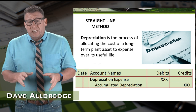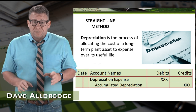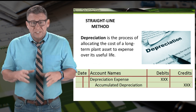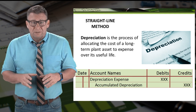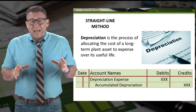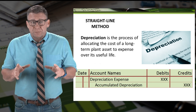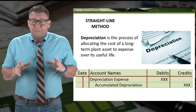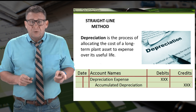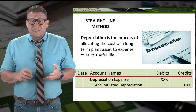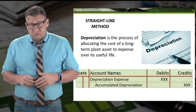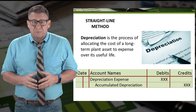Depreciation is the process of allocating the cost of a long-term plant asset to expense over its useful life. We allocate the asset's cost to expense with the following adjusting journal entry: we debit depreciation expense and credit accumulated depreciation for the amount of expense.